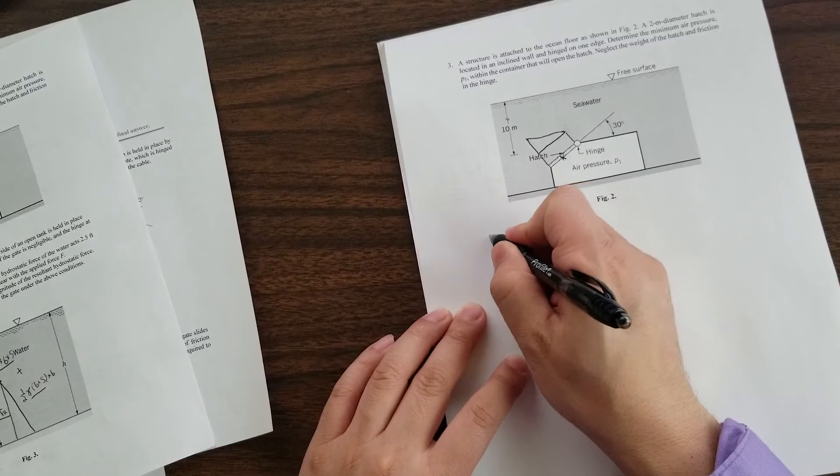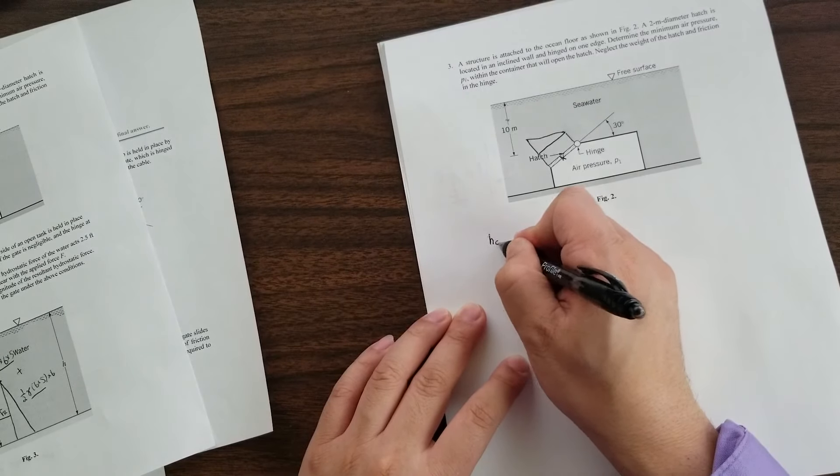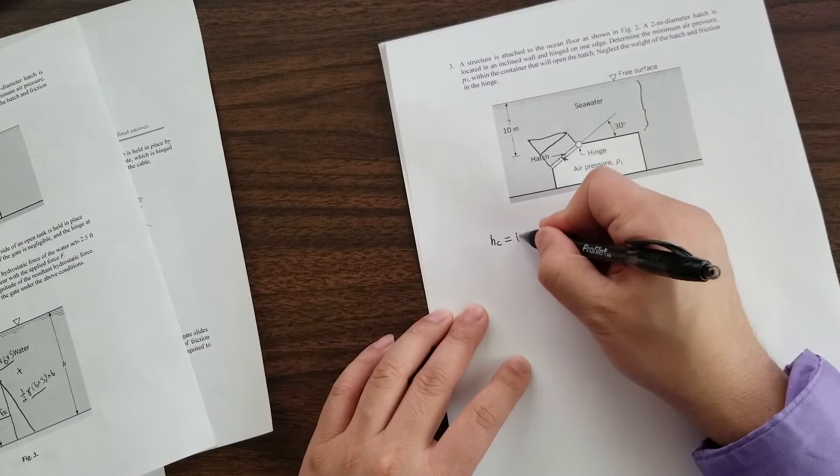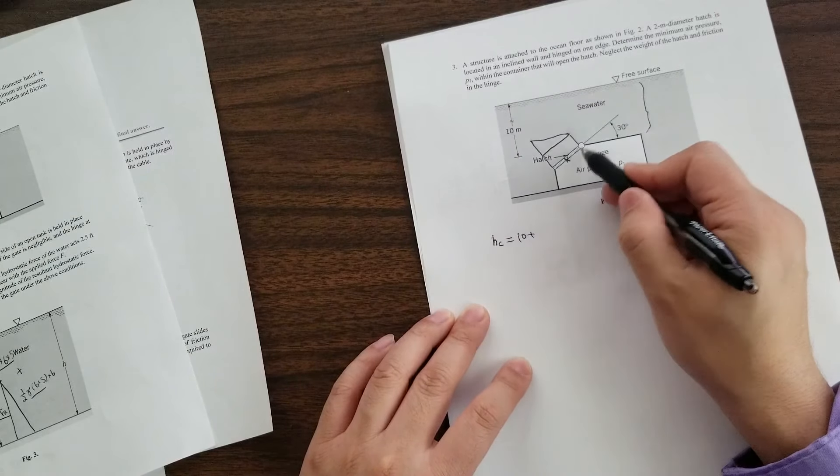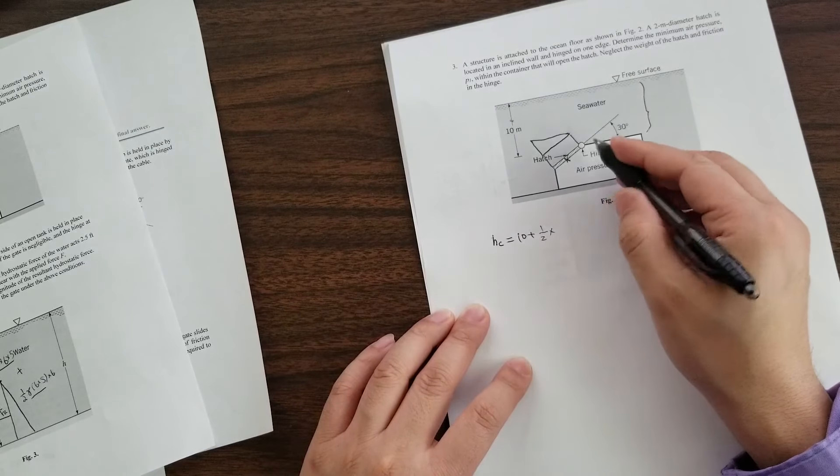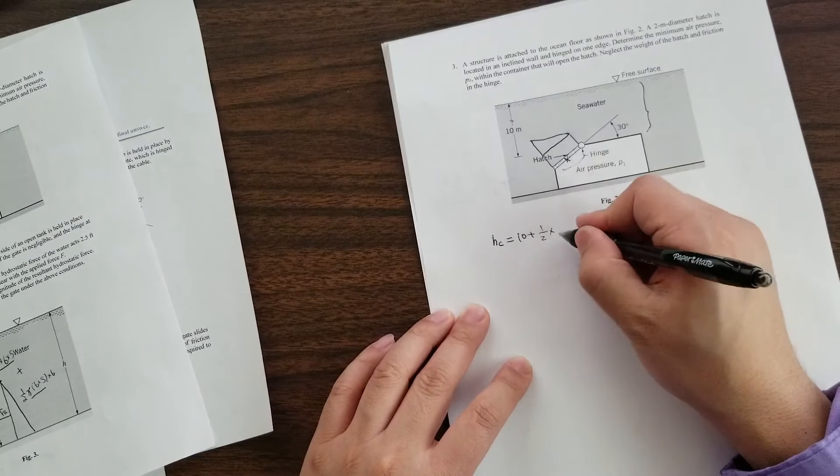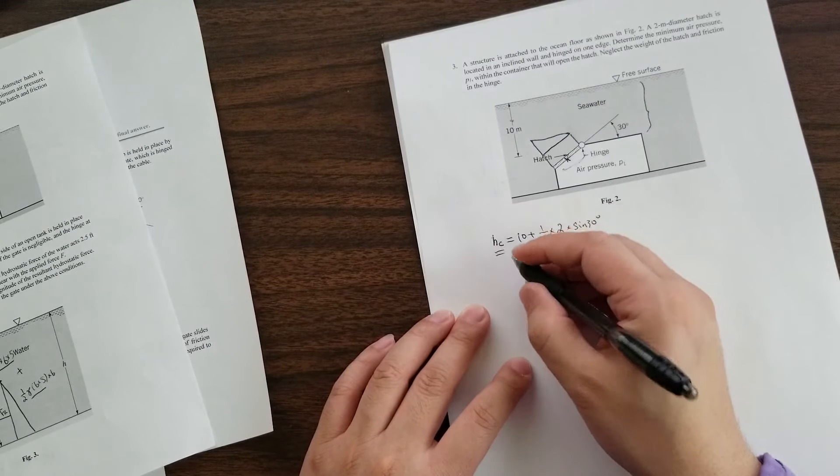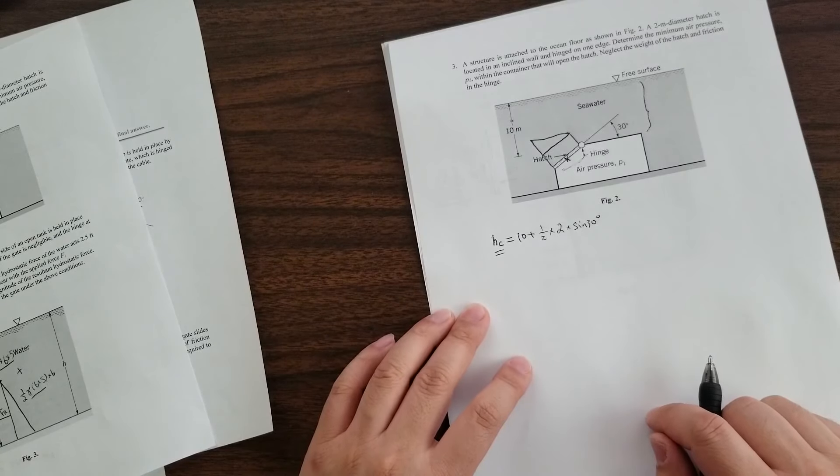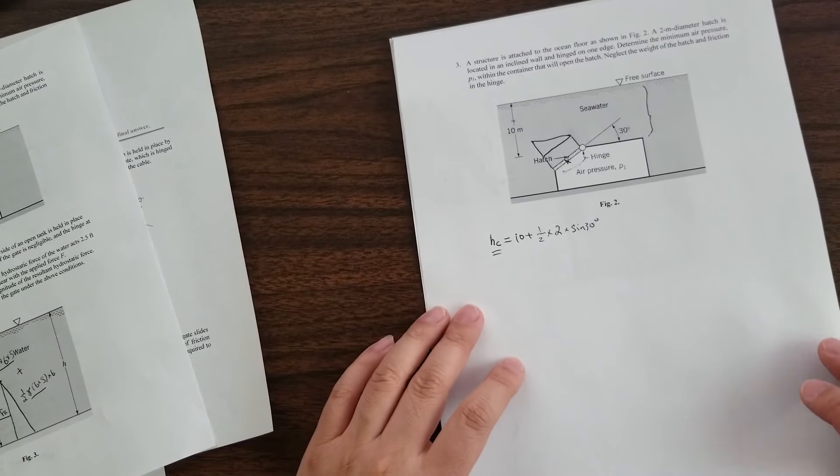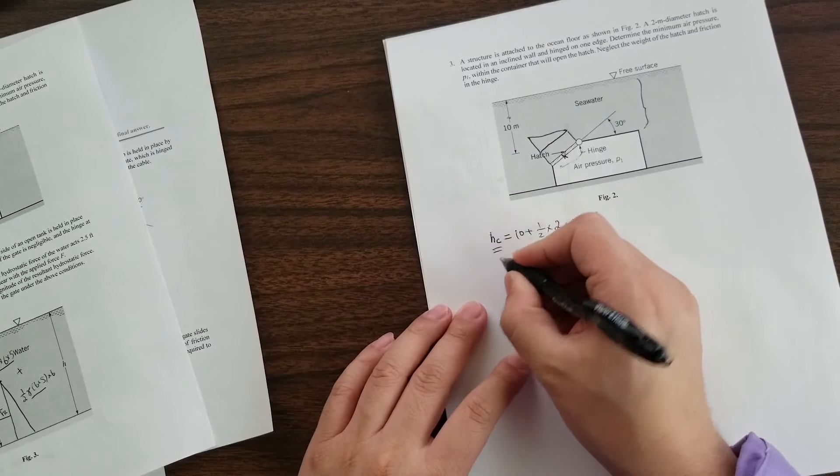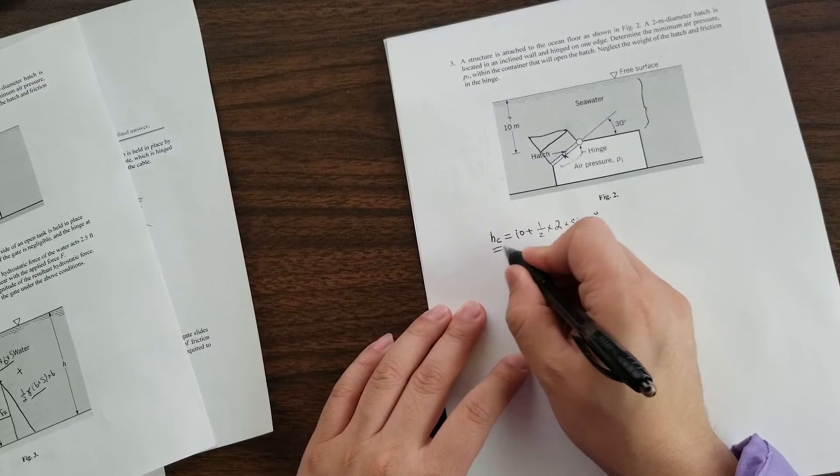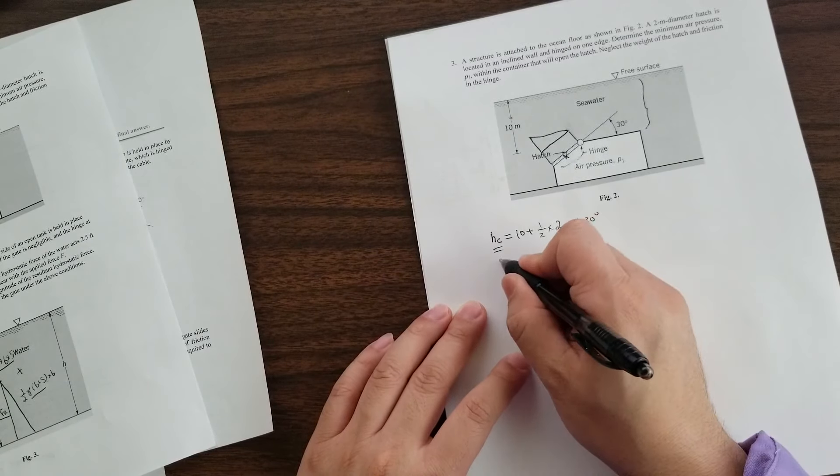The depth of the centroid is of course, this 10 meters plus half of this, which is half times the length of that is two meter times sine 30 degrees. So with HC, my kids are outside making some noises. Nevermind them. So with this HC,